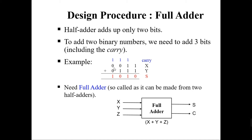For example, if we want to add 0011 with 0110, at the rightmost position we are adding one with one — only two bits — giving zero in the sum and one in the carry. That carry goes to the next column, where we need to add three bits together. In such cases you can't use half adders, because half adders can only add two bits. To add three bits, we need a full adder circuit.